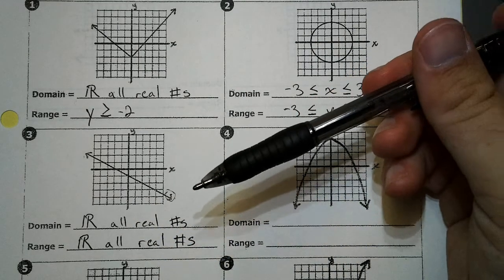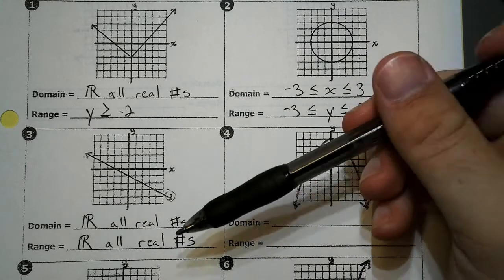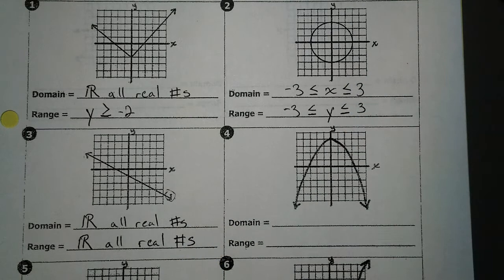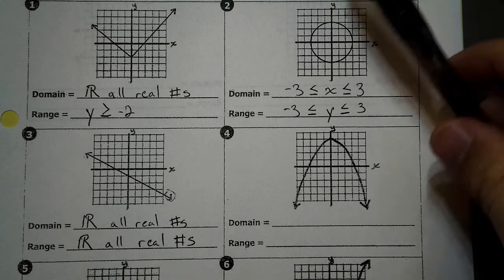Just because your domain is all real numbers or your range is all real numbers, it may change the other one. So you've got to look at both. Now I'm going to put a pause here and we'll make the next video, just trying to keep them short.